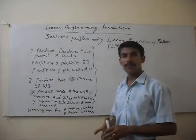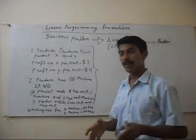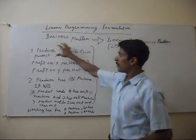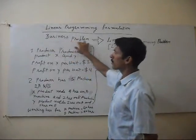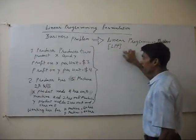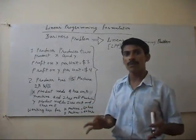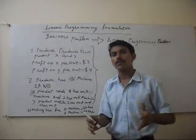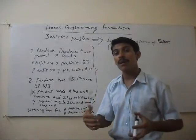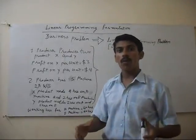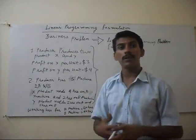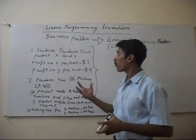How is this possible? Basically, there are lots of business problems. Without converting them into an LP problem, we cannot solve them — we cannot calculate the minimum or maximum quantity of units of two products.